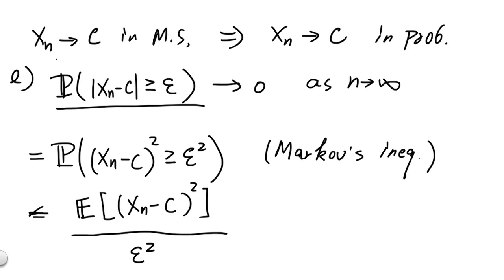Now, since we know xn converges to c in mean squared, and by definition mean squared, we know this precise expectation right here goes to 0. And therefore, the whole expression goes to 0 as n goes to infinity. Because the denominator here is a constant, and the numerator here goes to 0.